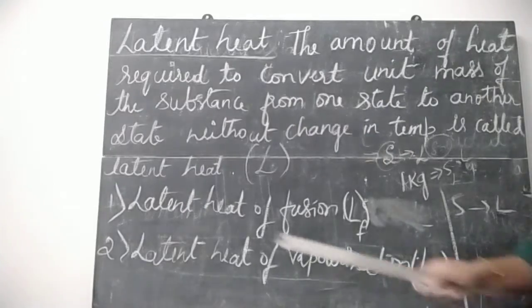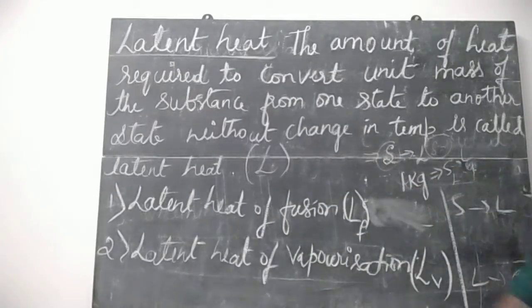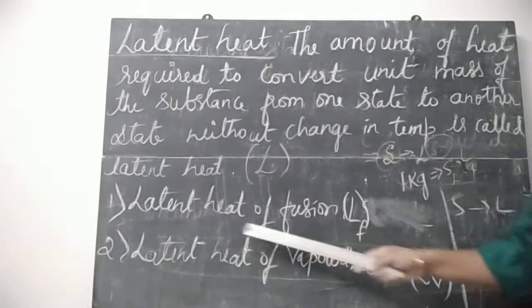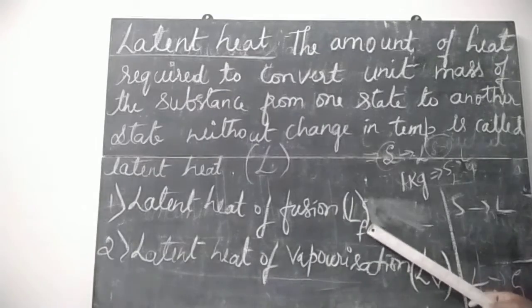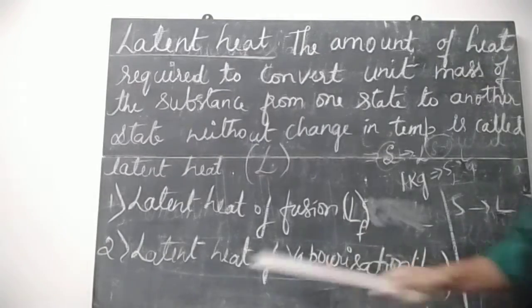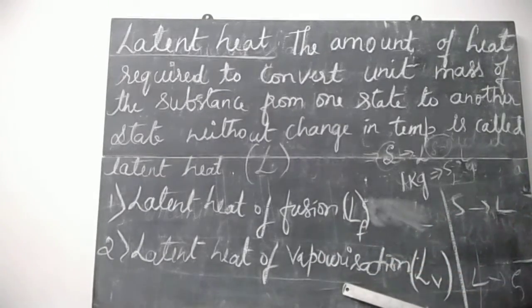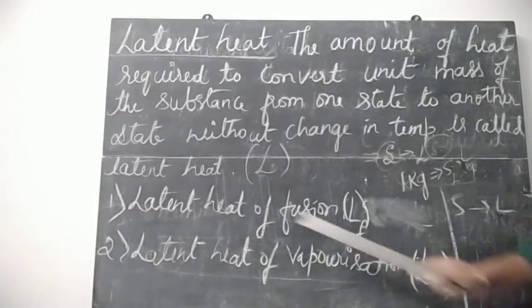There are two types of latent heat: latent heat of fusion, denoted by LF, and latent heat of vaporization, denoted by LV.